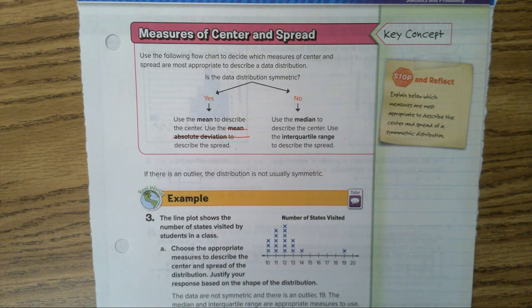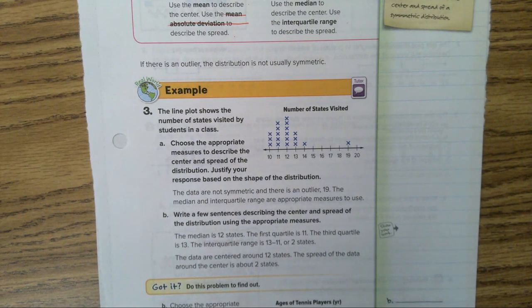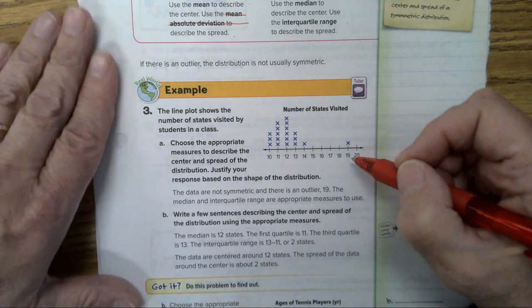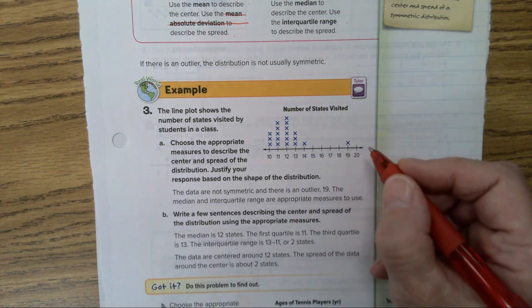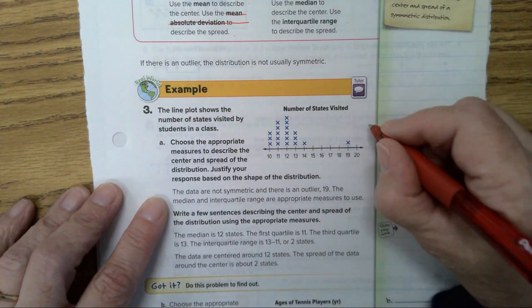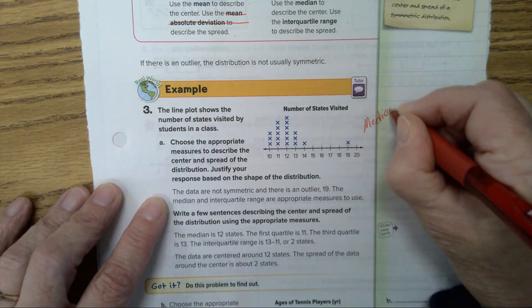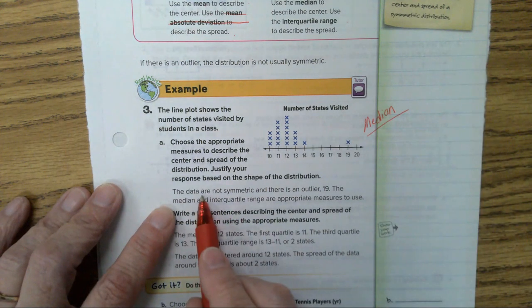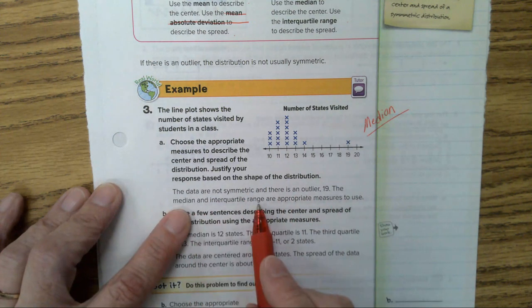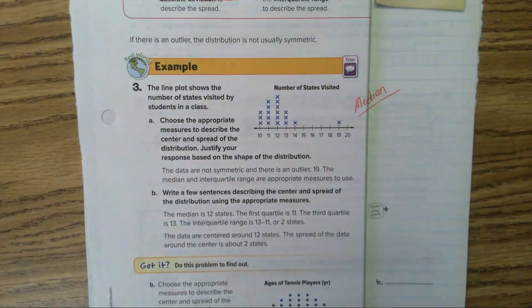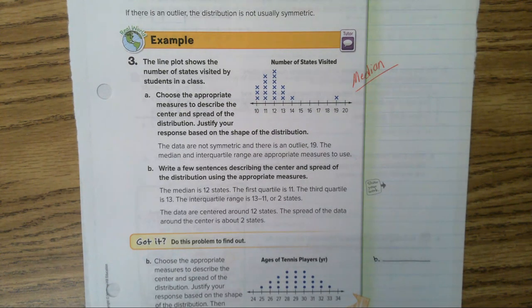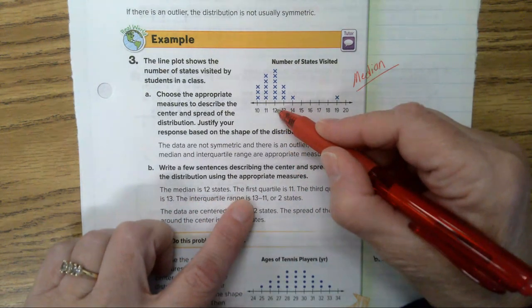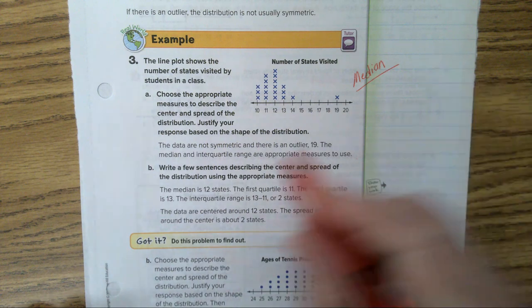Now let's go on to number three. The line plot shows the number of states visited by students in a class. Choose the appropriate measure to describe the center and spread of the distribution. When you have an outlier, what do you choose? The median. It's not symmetric and there's an outlier. So you're going to choose the median. And it says the data are not symmetric and there is an outlier. The median and interquartile range are appropriate measures to use. We're not going to really focus on the measure of spread so much on this, kids. In part B, write a few sentences describing the center and spread of the distribution using the appropriate measures. Well, the median is 12 states. And then they went in and found the first and third quartile. But the main thing is 12 states.